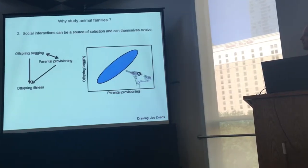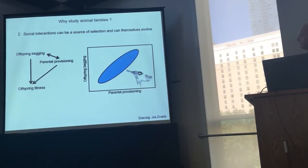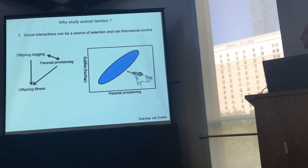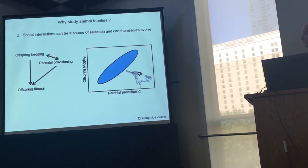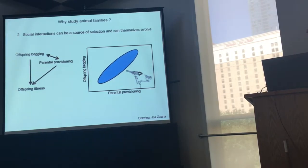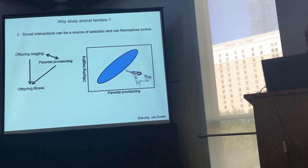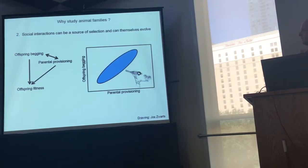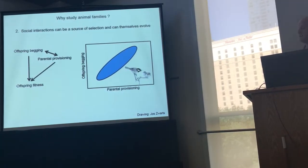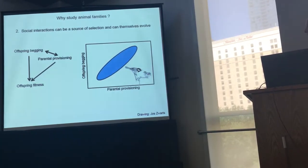The way this has been studied mostly is through quantitative genetic experiments that have used breeding designs to estimate the genetic correlation between traits expressed in offspring, like begging, and parental provisioning. And once we know the direction of this correlation, we can then infer how selection has acted on parents or offspring in the past.